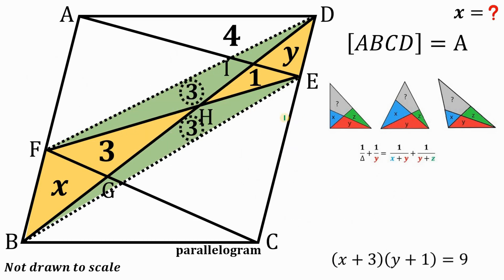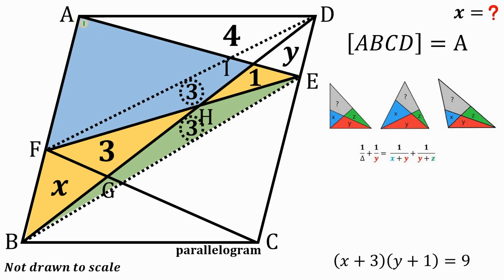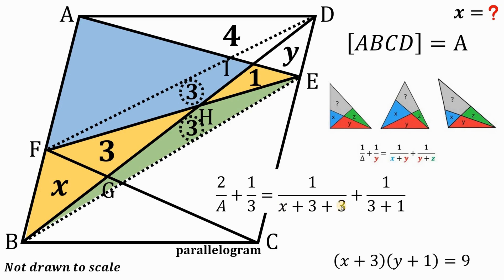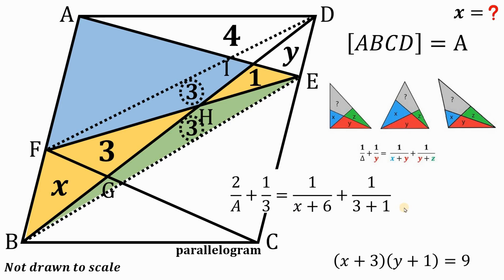Now let's use the ladder theorem with this triangle. The area of triangle AED equals half the area of parallelogram ABCD. Applying the ladder theorem: 1 over (A/2) plus 1 over 3 equals 1 over (X + 3 + 3) plus 1 over (3 + 1). Simplifying: 1 over (A/2) is 2 over A, X + 3 + 3 gives X + 6, and 3 + 1 equals 4. We now have another equation in terms of X.